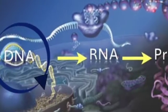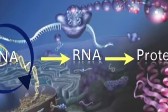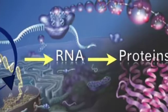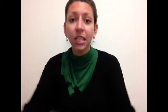This idea — the central dogma of molecular biology. We go from DNA to RNA to a protein in several steps.